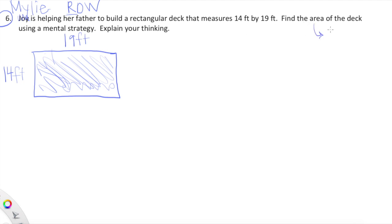We want to find the area of the deck. Area A equals length times width. We're going to multiply length times width to find our area, but we're going to do this using a mental strategy. Our area for this problem is equal to 19 times 14. We're going to be able to do this in our head by changing the problem a little bit. I'm going to look at 20 times 14.